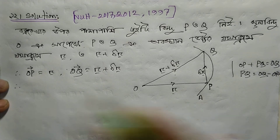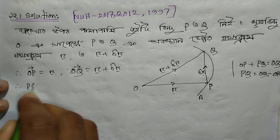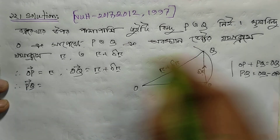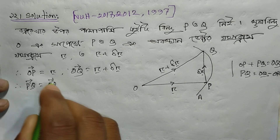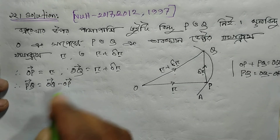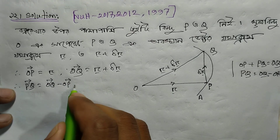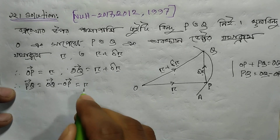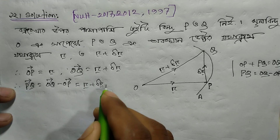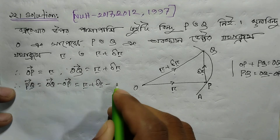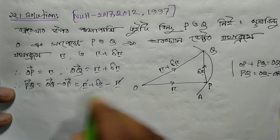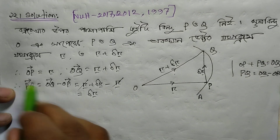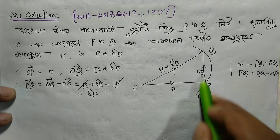Now we write that PQ vector equals OQ vector minus OP vector. So the magnitude of the PQ vector — the value of PQ vector — equals del r vector.